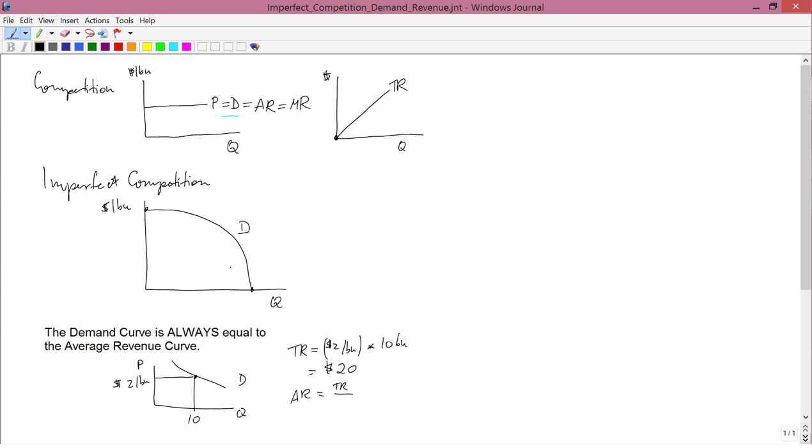Average revenue is how much money you're making on average for the 20 bushels. It's total revenue divided by quantity. Well, total revenue is $20. Quantity is 10 bushels, so it's $2 per bushel, which is the same as the point of the demand curve. So the demand curve always tells you what the average revenue is.